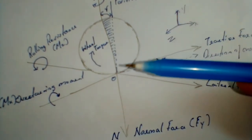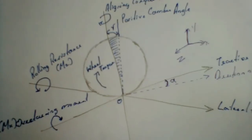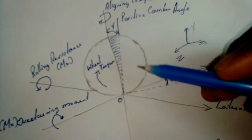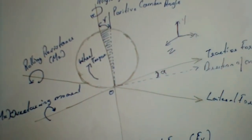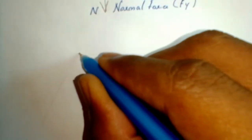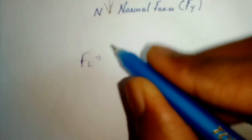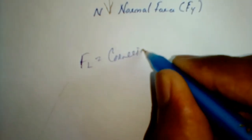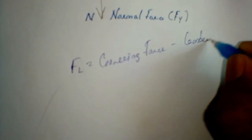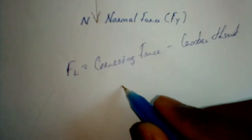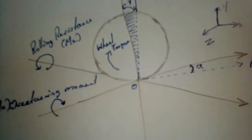If you need to know more, I have a video about camber thrust and camber angle — just check that out. In this figure we are considering the positive camber angle, so the total lateral force FL is equal to cornering force minus camber thrust, which is: FL = FC − FT.